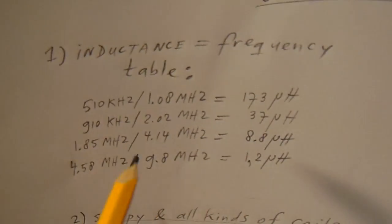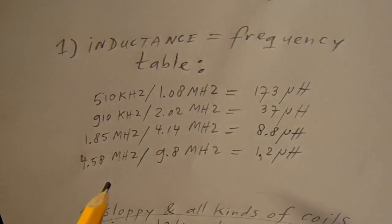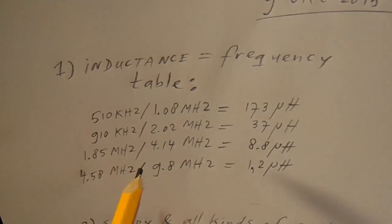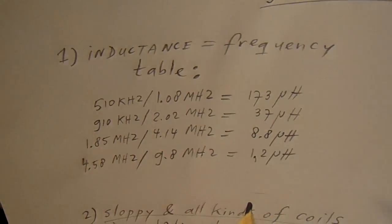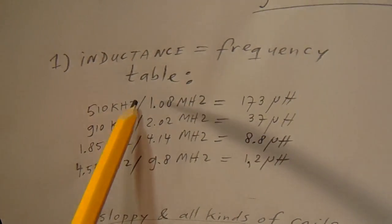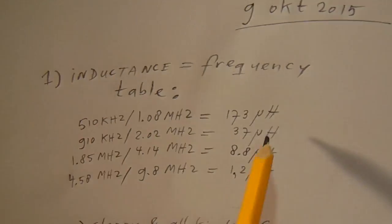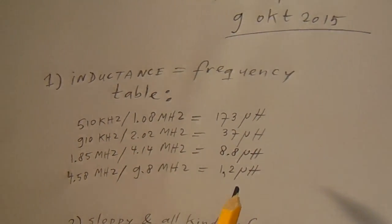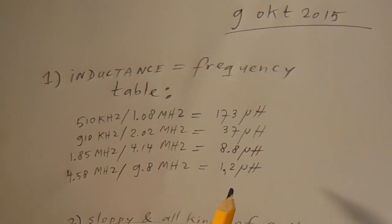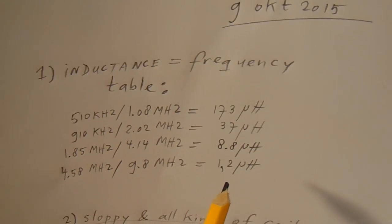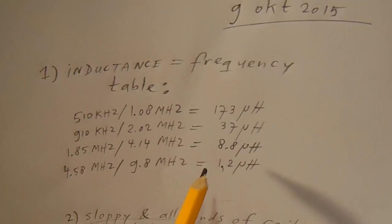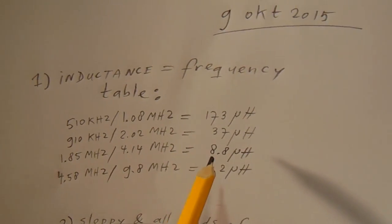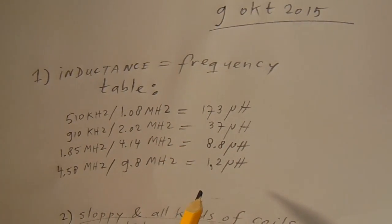And you can also make a table to see which frequency is related to which inductance. So these are more or less the most important inductances to make a radio on shortwave up to approximately 12 megahertz, from say 500 kilohertz up to 12 megahertz.